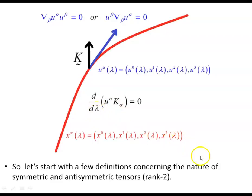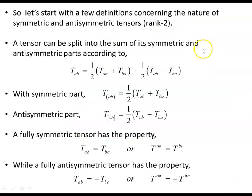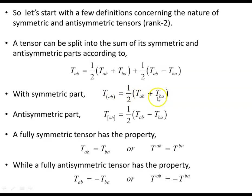Let's start with definitions for symmetric and anti-symmetric tensors of rank 2. A tensor can be split into the sum of its symmetric and anti-symmetric parts: T_{AB} equals the symmetric part plus the anti-symmetric part. The symmetric part uses parentheses around indices — T_{(AB)} — meaning T_{AB} = T_{BA}. The anti-symmetric part uses square brackets: T_{[AB]} = ½(T_{AB} − T_{BA}).